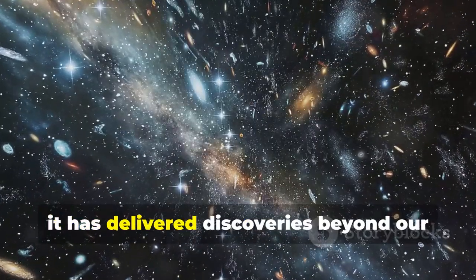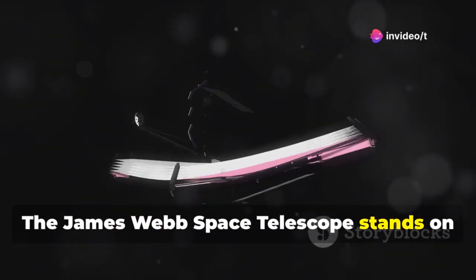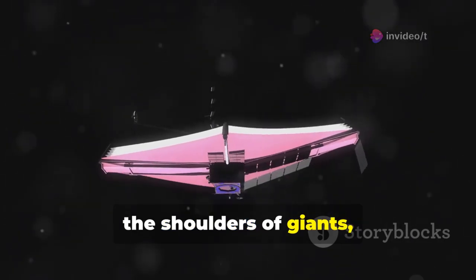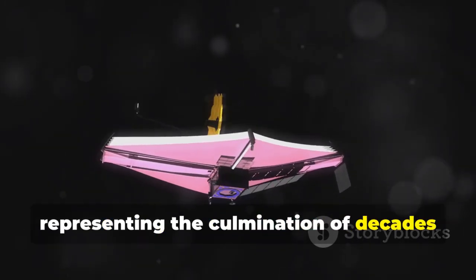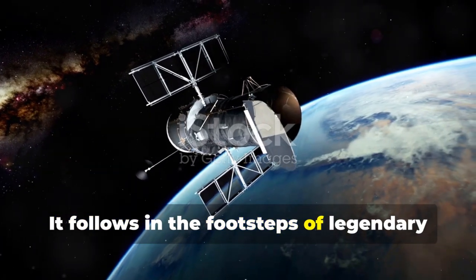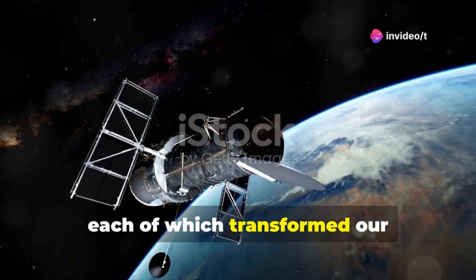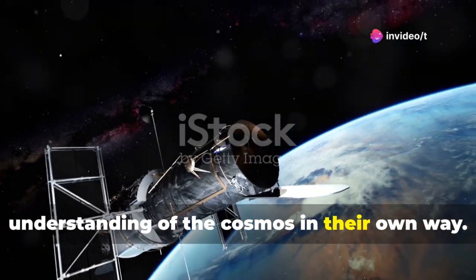Already it has delivered discoveries beyond our wildest dreams. The James Webb Space Telescope stands on the shoulders of giants, representing the culmination of decades of astronomical ambition and innovation. It follows in the footsteps of legendary observatories like Hubble and Spitzer, each of which transformed our understanding of the cosmos in their own way.